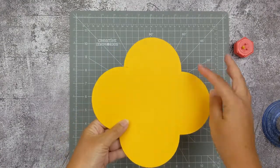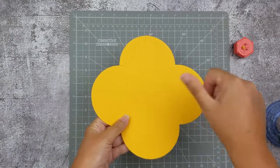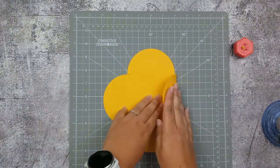Now you'll fold these half circles on the score line into the inside of your card.